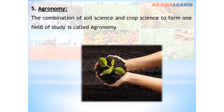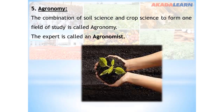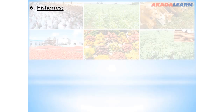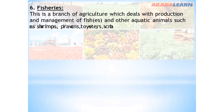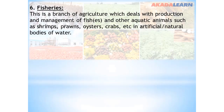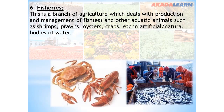That is, whoever studies agronomy studies soil and crop altogether. The expert is known as an agronomist. Then we have fishery. This is a branch of agriculture which deals with the production and management of fishes and other aquatic animals such as shrimps, prawns, oysters, crabs, and many more in artificial or natural water bodies. This can also be called aquaculture.